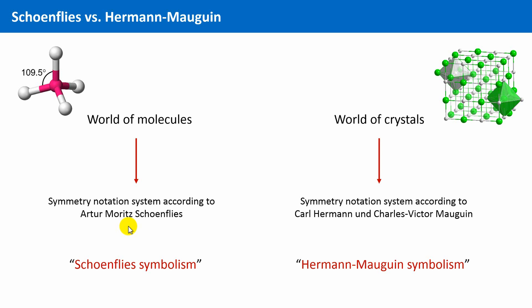The nomenclature of symmetry in the area of solid-state matter was later in the 20th century modified by two scientists, namely Carl Hermann and Charles-Victor Mauguin. This symbolism is now used as the worldwide standard in the crystalline world. And here not only point symmetry is present, but translational symmetry as well.